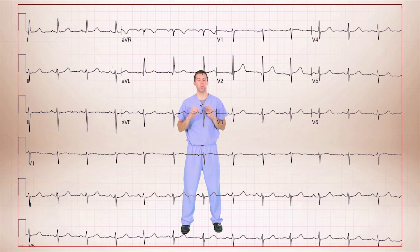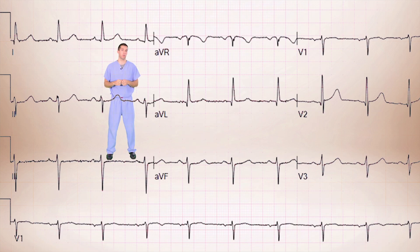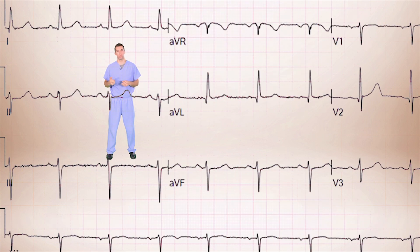Alright, now let's practice determining axis. Here we have a complete 12 lead EKG. Which leads do we want to look at when we determine axis? Remember that when we talk about axis, we're talking about the frontal plane. So we want to look at the limb leads. So let's take a closer look at those.